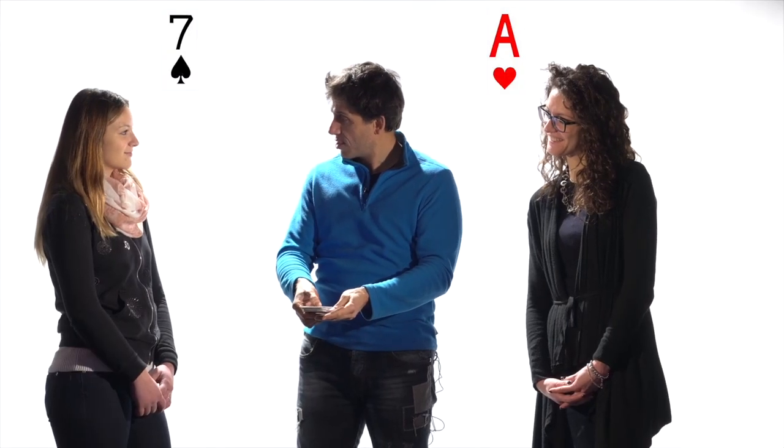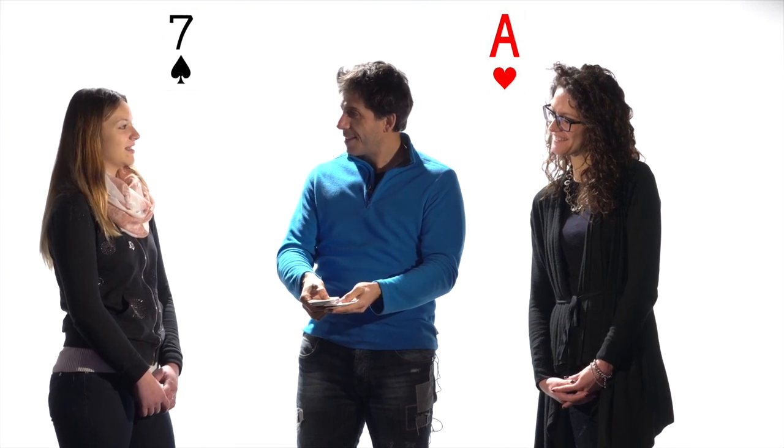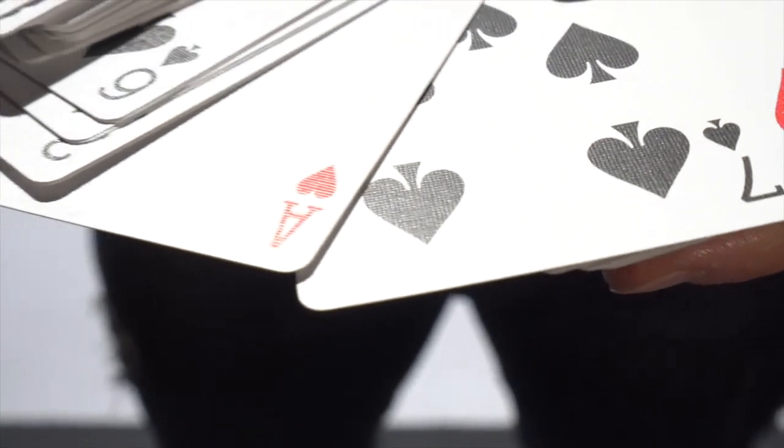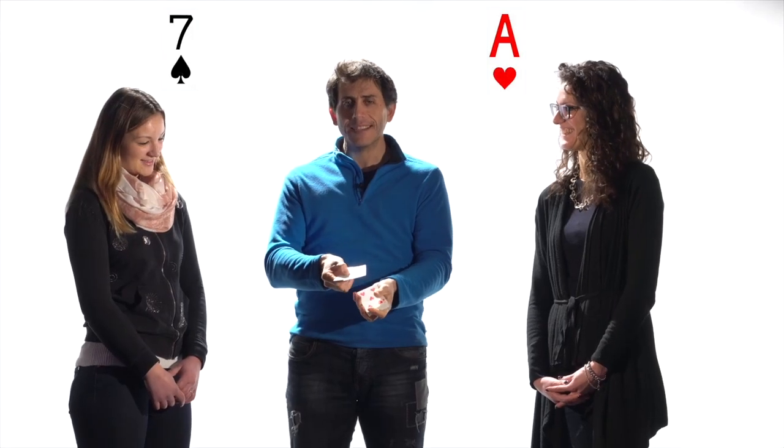When there's a connection, people move closer but also cards move closer. And near the Ace of Hearts there is exactly the Seven of Spades, the card that you chose.